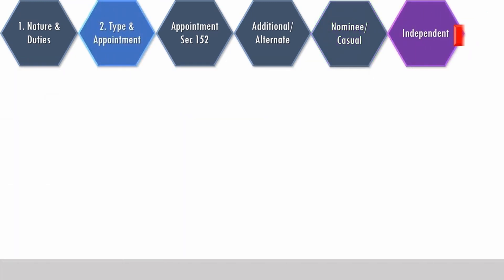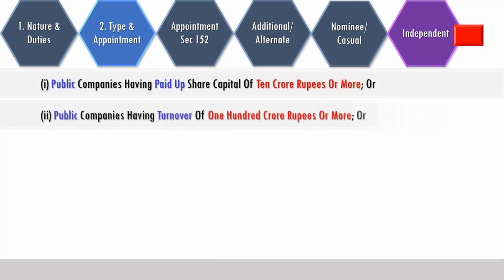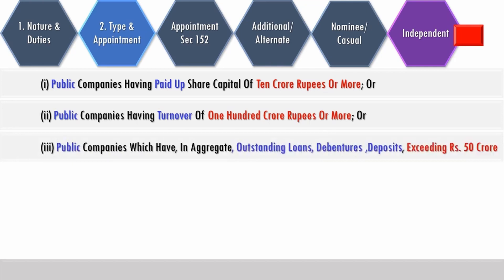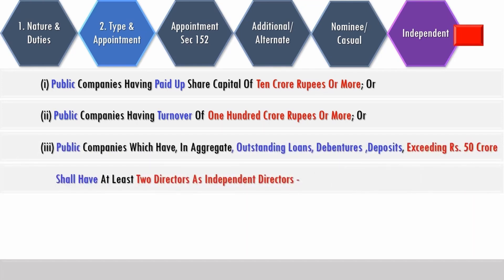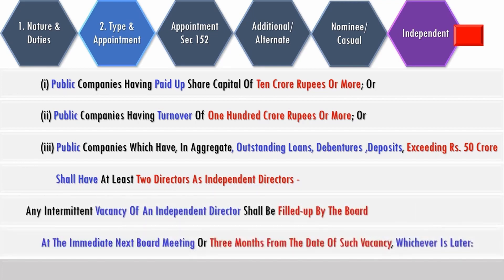A minimum of two independent directors is required for a public company having a paid-up capital of rupees 10 crore or more, or a turnover of 100 crore rupees or more, or a public company which in aggregate has outstanding loans, debentures, and deposits exceeding rupees 50 crores. Any intermittent vacancy of an independent director shall be filled up by the board at the immediate next board meeting or within three months from the date of such vacancy, whichever is later.